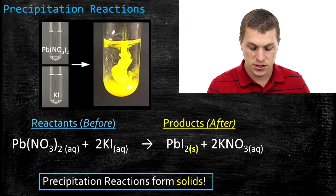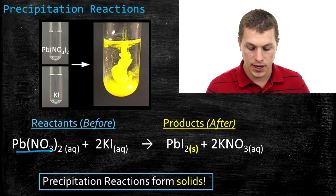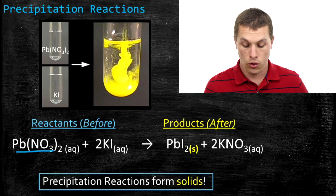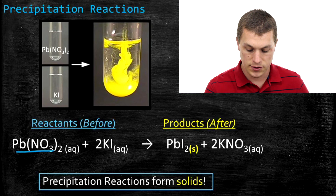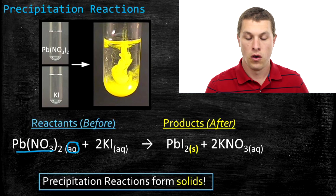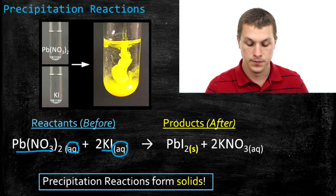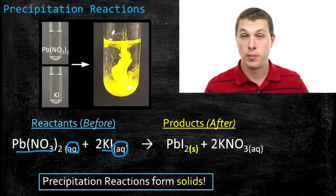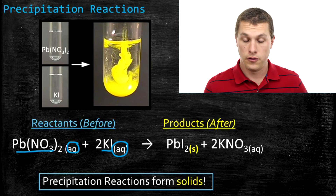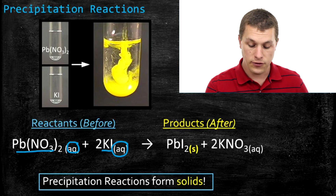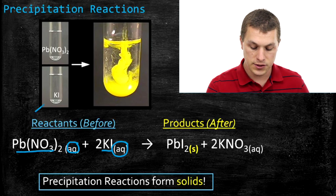If we look here at this reaction, we're combining lead nitrate, which is aqueous — that's what AQ means, or dissolved — with potassium iodide, also aqueous or dissolved. They're both dissolved, and that's why up here they just look like clear solutions.